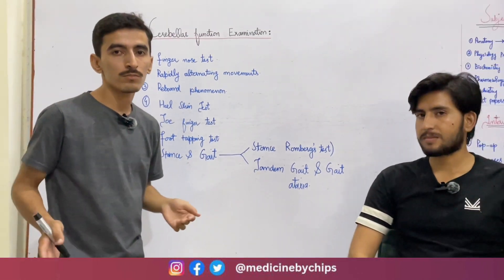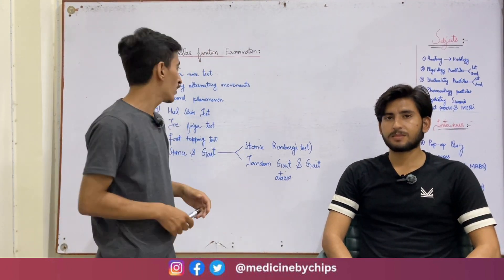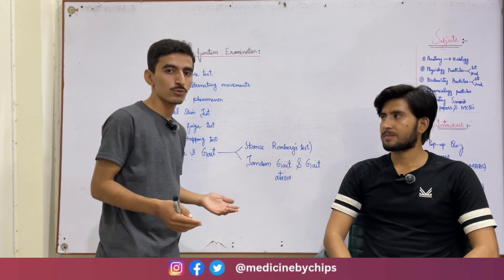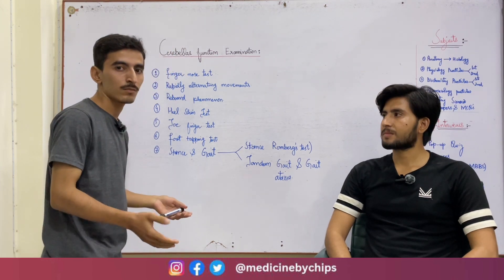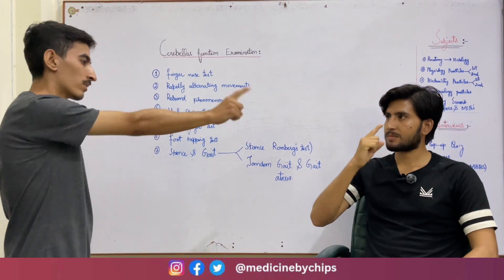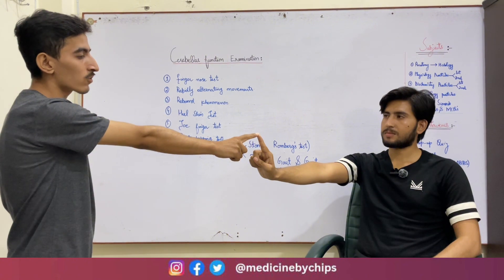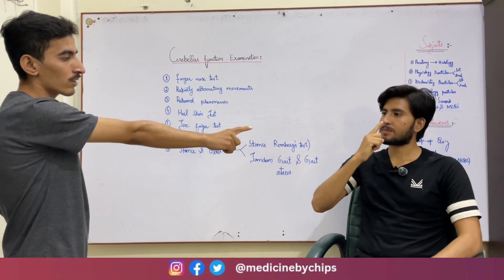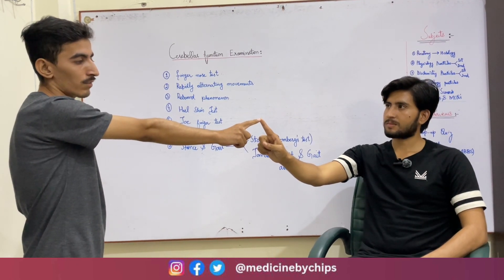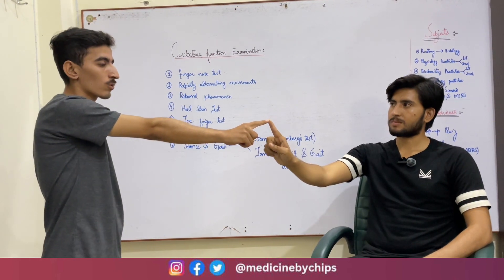First we will start with the finger-nose test. Before starting any procedure we have to take consent from the subject, then explain the procedure. We will ask the subject to touch his nose with his index finger and then touch the finger to the outstretched hand of the examiner, and repeat this again and again — first with eyes open, then with eyes closed.